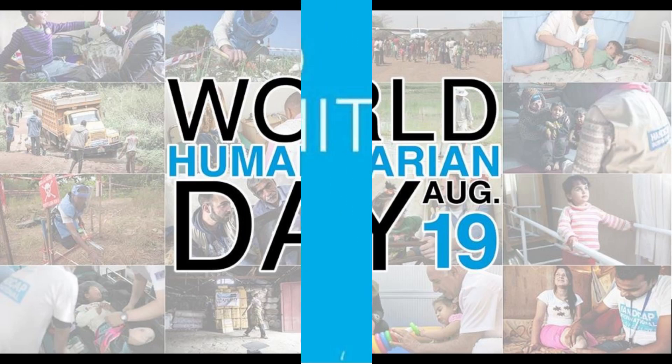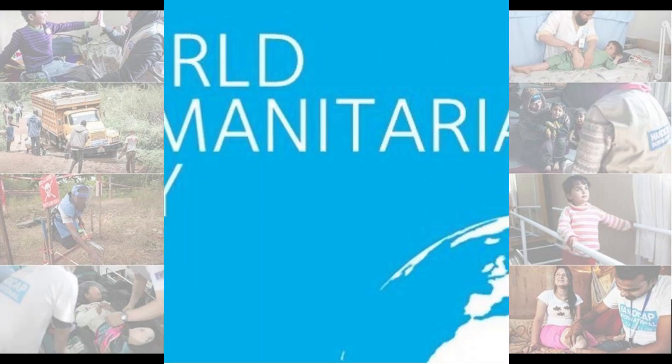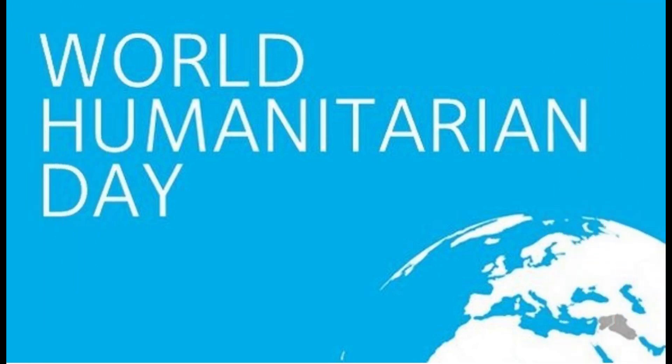We will also endeavor to minimize the negative impact of humanitarian assistance, seeking to avoid long-term beneficiary dependence upon external aid. Principle 9: We hold ourselves accountable to both those we seek to assist and those from whom we accept resources. We often act as an institutional link in the partnership between those who wish to assist and those who need assistance during disasters. We therefore hold ourselves accountable to both constituencies. All our dealings with donors and beneficiaries shall reflect an attitude of openness and transparency. We recognize the need to report on our activities from a financial perspective and the perspective of effectiveness, and to ensure appropriate monitoring of aid distributions and regular assessments of the impact of disaster assistance.